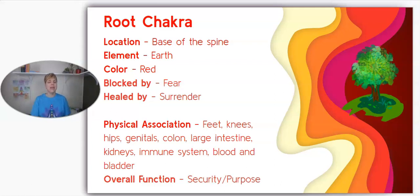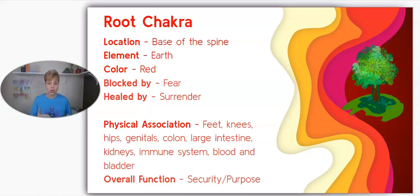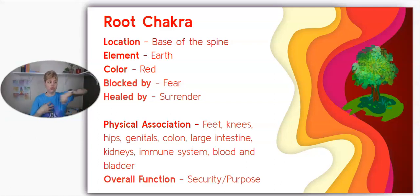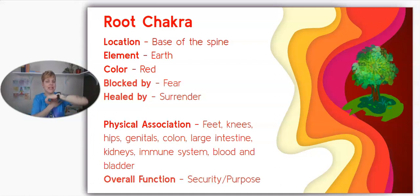There are many physical associations with the root chakra — you won't remember them all. What I do is associate whatever is happening in my body and ask which chakra that ailment is physically closest to. If I have shoulder pain, I associate it with the heart chakra and work on that. For the root chakra, the main physical associations include the feet, knees, all of the legs, the hips, the genitals, the colon, the large intestine, the kidneys, the immune system, blood, and bladder.